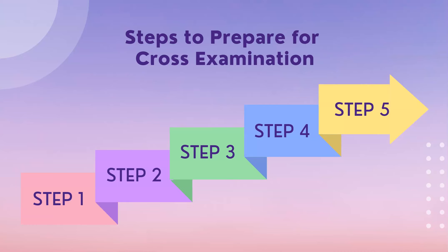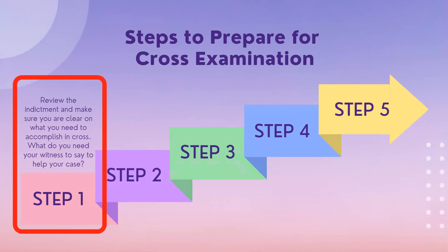Cross-examination is a five-step process. The first step is to review the indictment and make sure you are clear on what you need to accomplish in cross-examination. What do you need your witness to say to help you prove what you ultimately want to prove? A common mistake is jumping right into writing questions, but you really have to focus on the elements of the case and what you're ultimately trying to accomplish at trial.